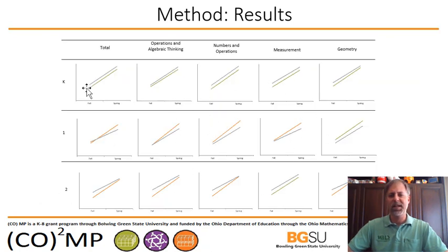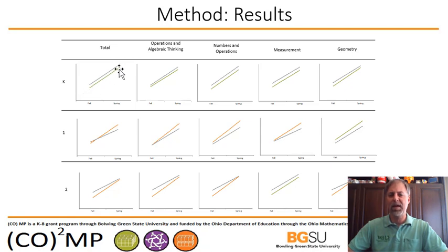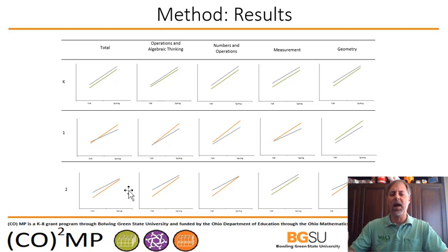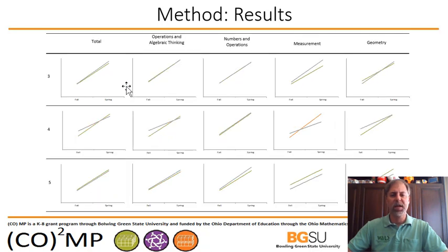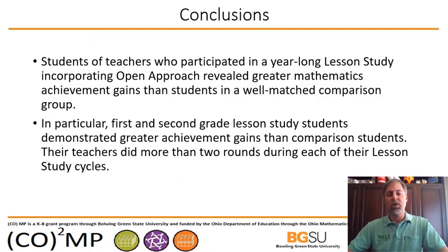Here are some graphics showing the data. Anything in color is the starting and ending point for the lesson study group; anything in black or gray is the comparison group. In many cases, the lesson study group students started a bit below but ran parallel in growth to the other students. Where the color changes to orange, the lesson study students statistically significantly outperformed their peers — including a notable measurement area in fourth grade where 410 lesson study students significantly outperformed their peers.